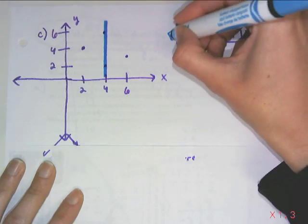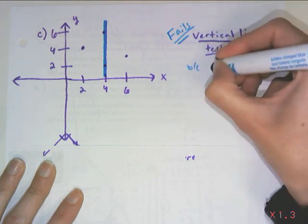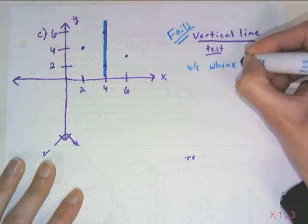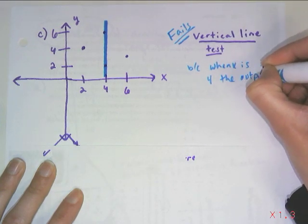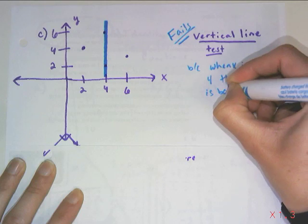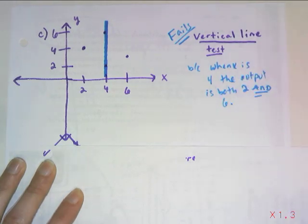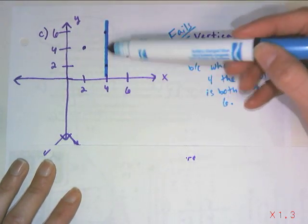So we have a greedy x value of 4 here. So this, we will say, fails the vertical line test. And because when x is 4, the output is both 2 and 6. So to be a function, we need to make sure that every x has only one output. So it fails it when x is 4.